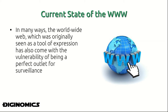When the world wide web was initially implemented it used IP addresses as the uniform resource locator for servers. Eventually we moved to a domain naming system that gave it more convenience and more usability, but also came with the potential for increased surveillance.